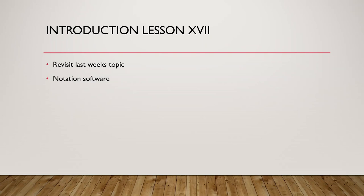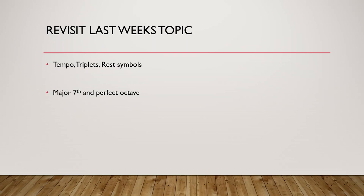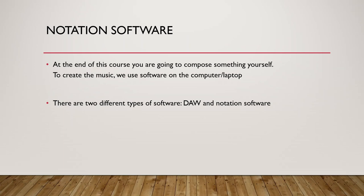The remaining part of this lesson will be a tutorial on how MuseScore works. First, let's revisit last week's topic. It was a chill lesson — we covered tempo, triplets, rest symbols, and also learned the last two intervals of this course: the major 7th and the perfect octave. We now know all diatonic intervals of the major scale.